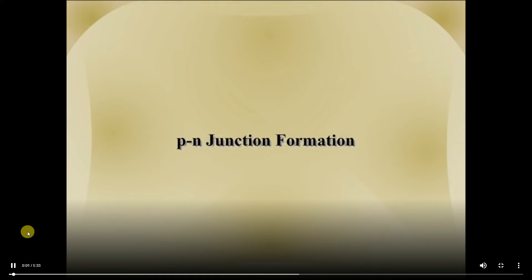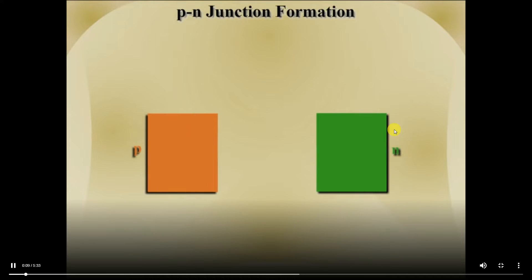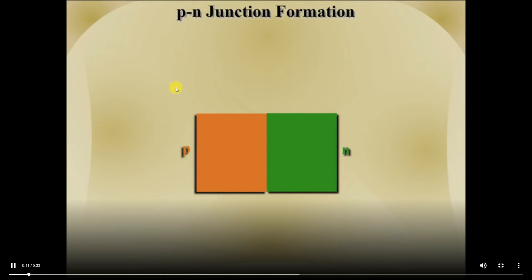A PN junction is formed when p-type semiconductor material is joined with n-type semiconductor material. This can be done either by diffusing aluminium in n-type semiconductor or by diffusing phosphorus in p-type semiconductor.